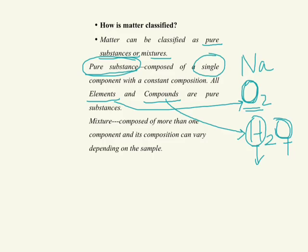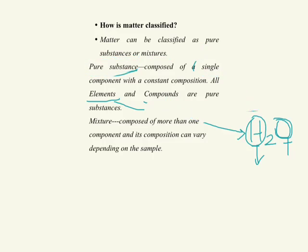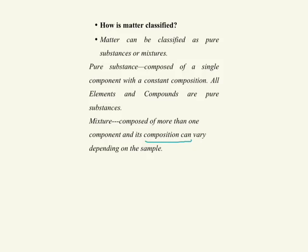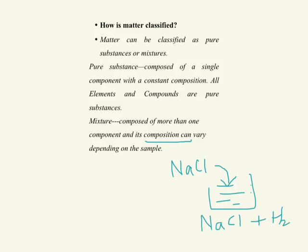A mixture is composed of more than one component and its composition can vary. For example, if you take salt (NaCl) and dissolve it in water, it is not pure — it's a mixture of two compounds. We know it's a mixture because the components can be separated. Can we separate salt from water? Yes — if you evaporate the water, what remains is salt.